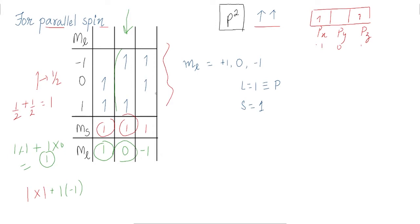We have three orbitals and we arrange two electrons in different patterns. Assuming equal energy, they can go in any orbital. So we have three combinations for parallel spin. For the third combination, ms=1 and ml=−1. So the ml values from parallel spin are: plus one, zero, and minus one.